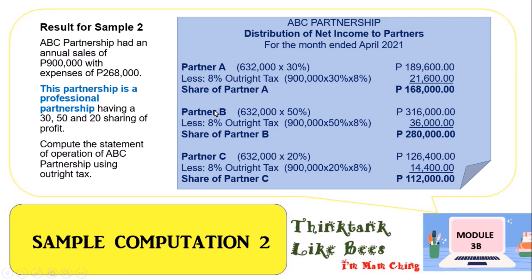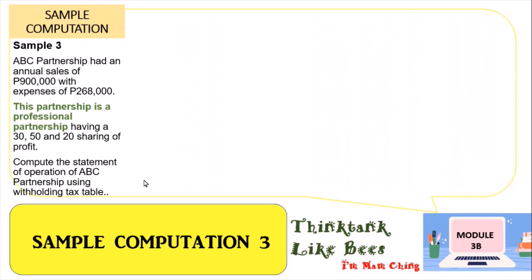For Partner B, 632,000 times 50 percent equals 316,000. The 8 percent outright tax is: 900,000 times 50 percent times 8 percent, giving an outright tax of 36,000. For Partner C, 632,000 times 20 percent equals 126,400. The outright tax is: 900,000 times 20 percent times 8 percent, giving an outright tax of 14,400. Note that the outright tax is always based on the gross sales.